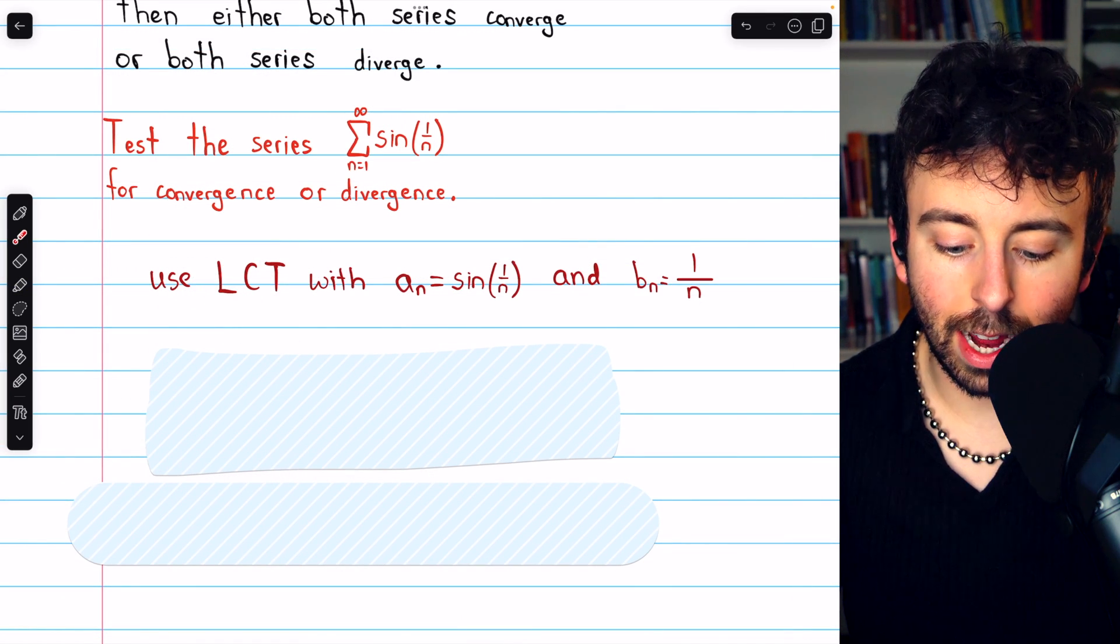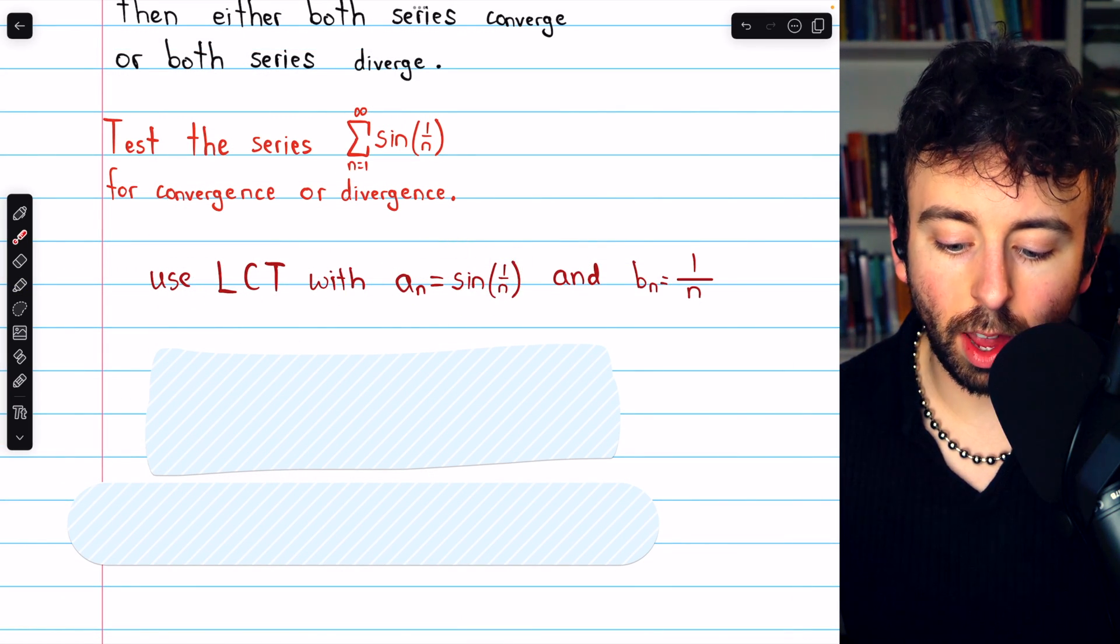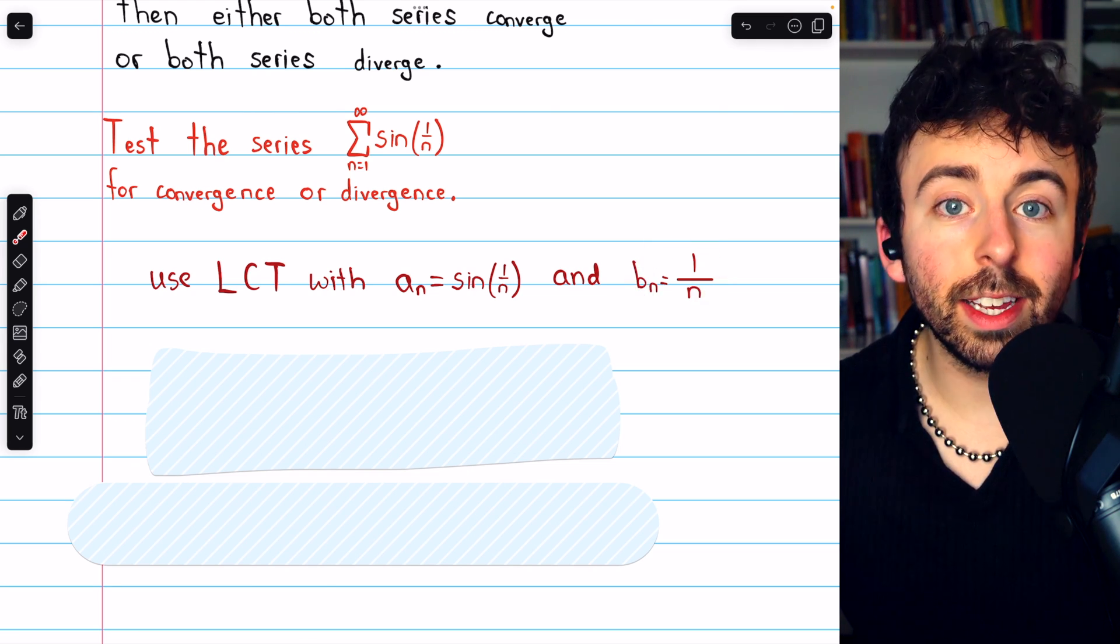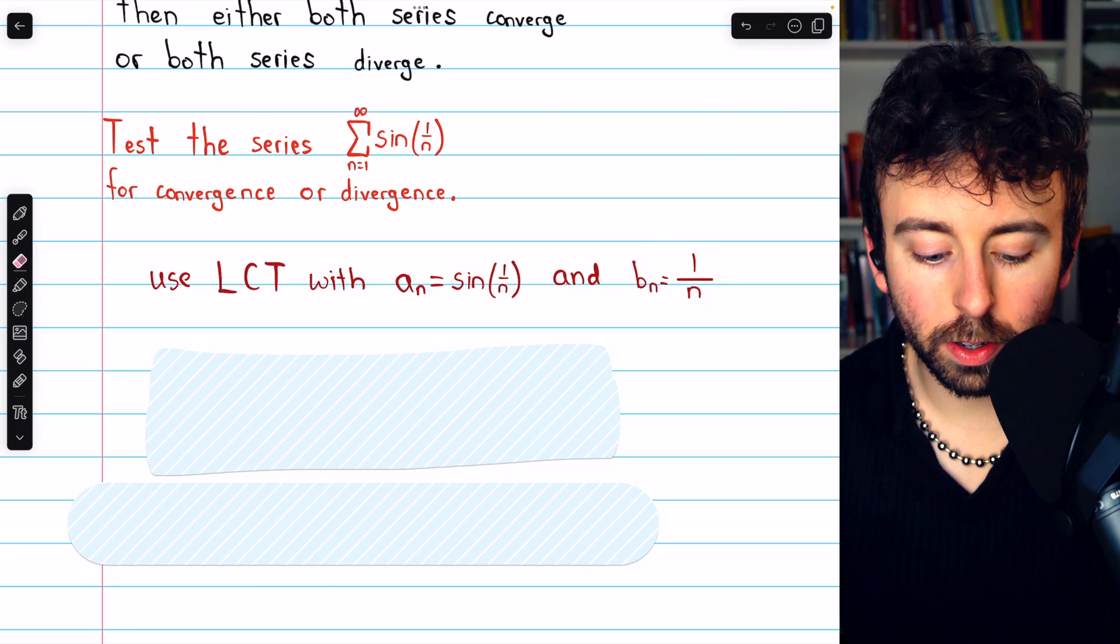So we'll use the limit comparison test with a_n equal to sine of 1 over n, those are the terms of our series, and then the other series we're going to use is the harmonic series, which we know to diverge.